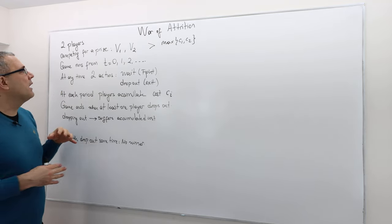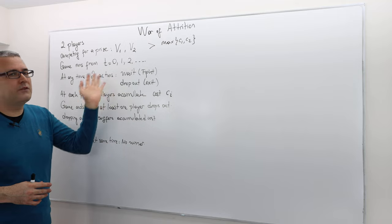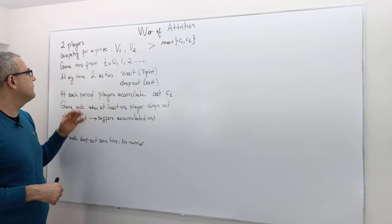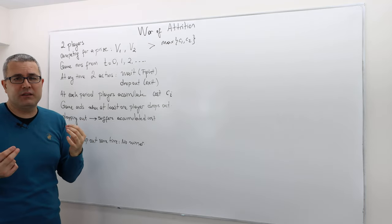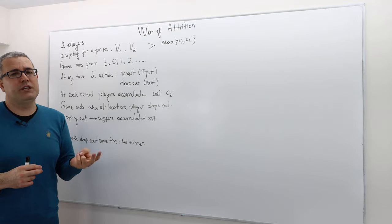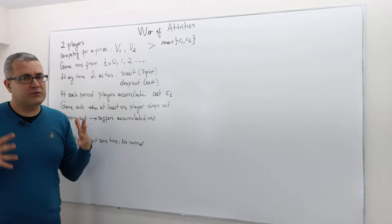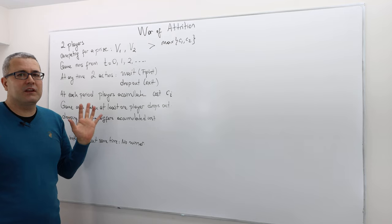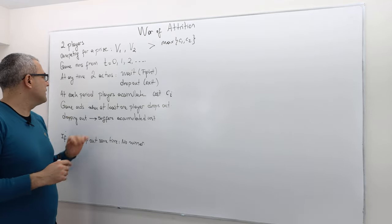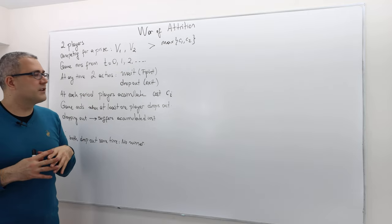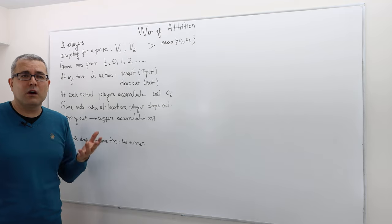The game is an infinite horizon game. It starts from time 0 and goes up to infinity — meaning it never stops, potentially. At any given time, players simultaneously and independently choose one of two actions: they either wait and fight, or they drop out and exit. The strategy space is pretty simple in that sense. At each period, players accumulate some costs — if you keep fighting, you will actually accumulate costs.